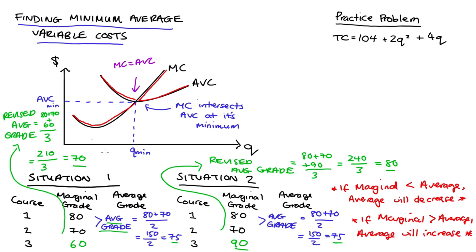So that's the explanation for why we have this relationship. If we want to find the minimum of average variable costs, all we need to do is set the marginal cost curve equal to average variable costs and do our calculations from there. Armed with this understanding, let's have a think about our practice problem. Here we have a total cost curve equal to 104 plus 2q squared plus 4q. To find the minimum of average variable costs, we need to find average variable costs and marginal costs, then set those two functions equal to one another.